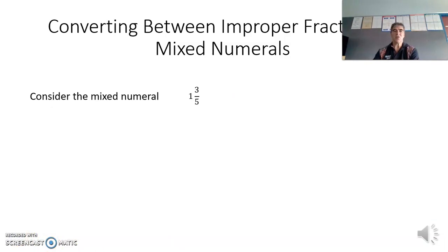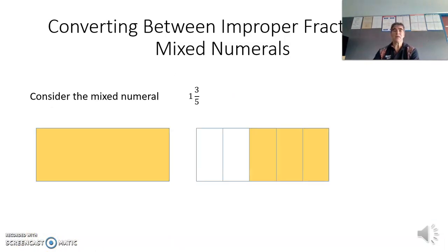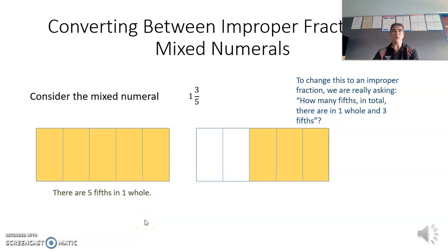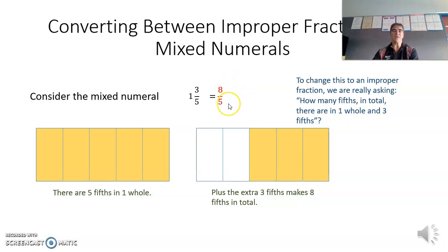So let's consider another mixed numeral: one and three fifths. Drawing a diagram, we've got one whole and three fifths — this has been cut up into five equal pieces and we've got three of them. To change this to an improper fraction, we're asking how many fifths there are in total in the one whole and three fifths. Taking this one whole and cutting it into five equal pieces, there are five fifths that make up that one whole. Now adding the extra three fifths — five there and another three here — we've got eight fifths in total.